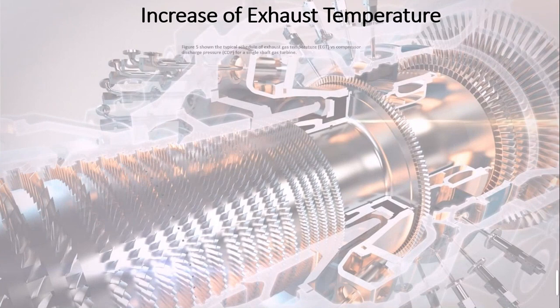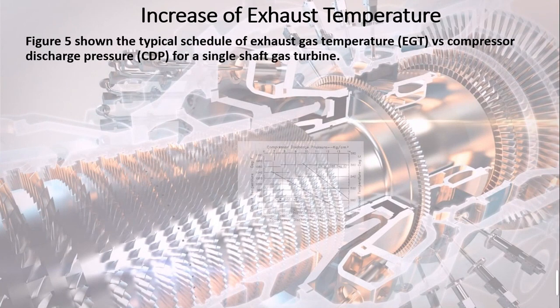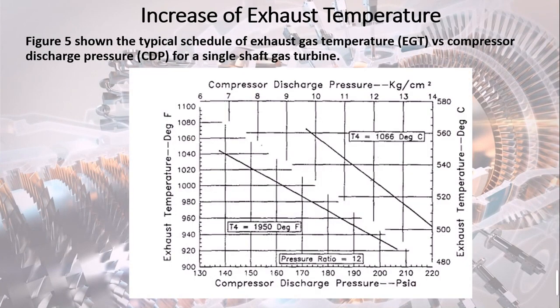Figure 5 shows the typical schedule of exhaust gas temperature (EGT) vs compressor discharge pressure (CDP) for a single shaft gas turbine.